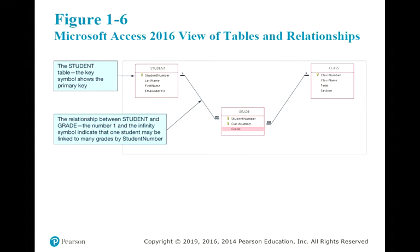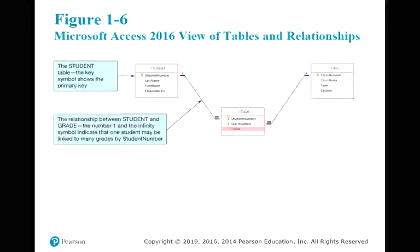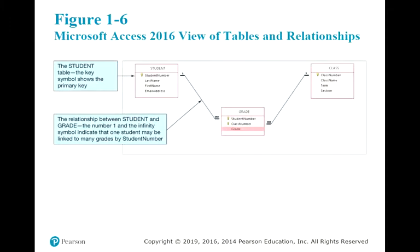To describe the structure of your database, we usually use a diagram or a set of language to represent those structures. This is often called metadata. A diagram like this is also part of the metadata definition we commonly encounter. People with some database exposure might immediately say this is an entity relationship diagram or ER diagram — but in fact, it is not. This diagram is directly generated from Microsoft Access. Sometimes we call it a relational model or relational diagram instead of an entity relationship diagram.